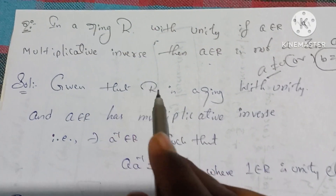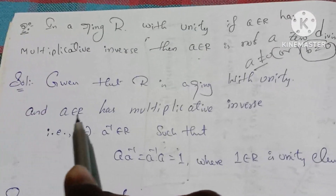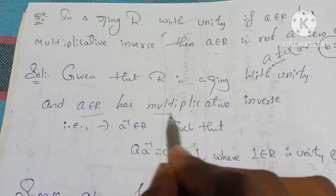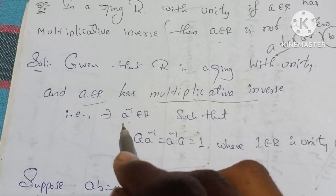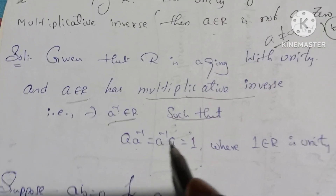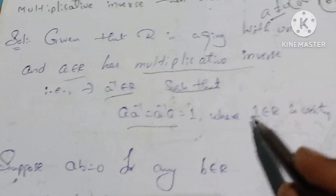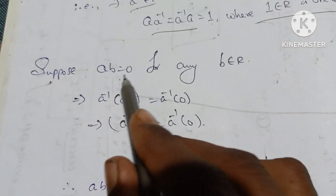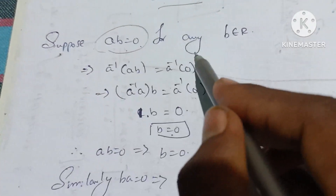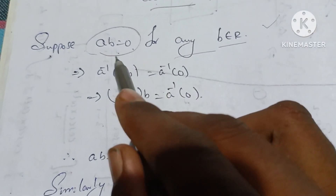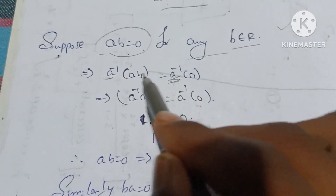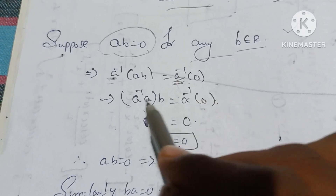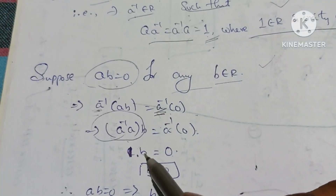Solution: Given that R is a ring with unity, and a belongs to R has a multiplicative inverse. Suppose a·b is equal to 0 for any b belonging to R. Multiplying both sides by a-inverse: a-inverse into a·b is equal to a-inverse into 0. Then (a-inverse · a) into b equals 0, which gives 1 into b is equal to 0.